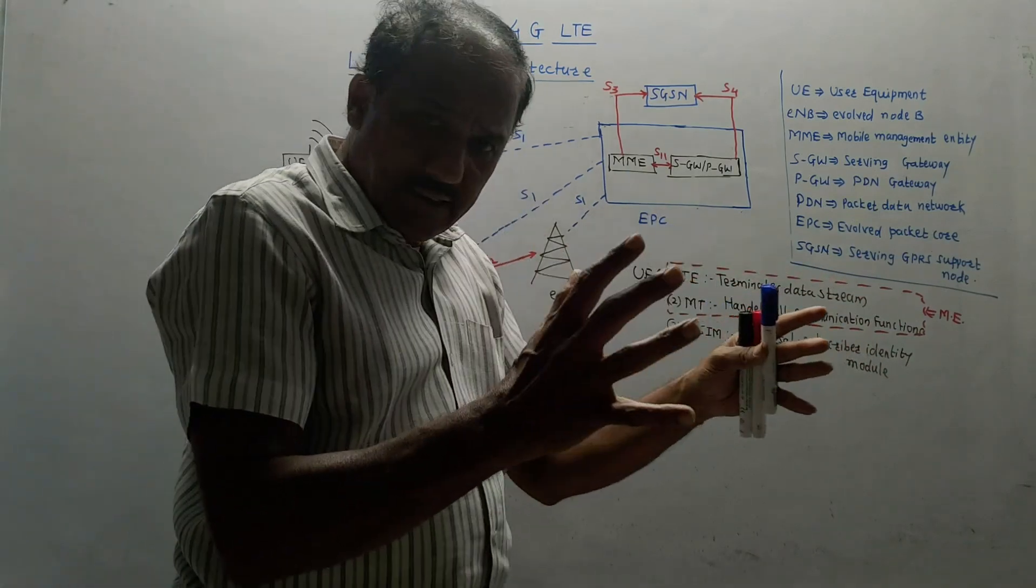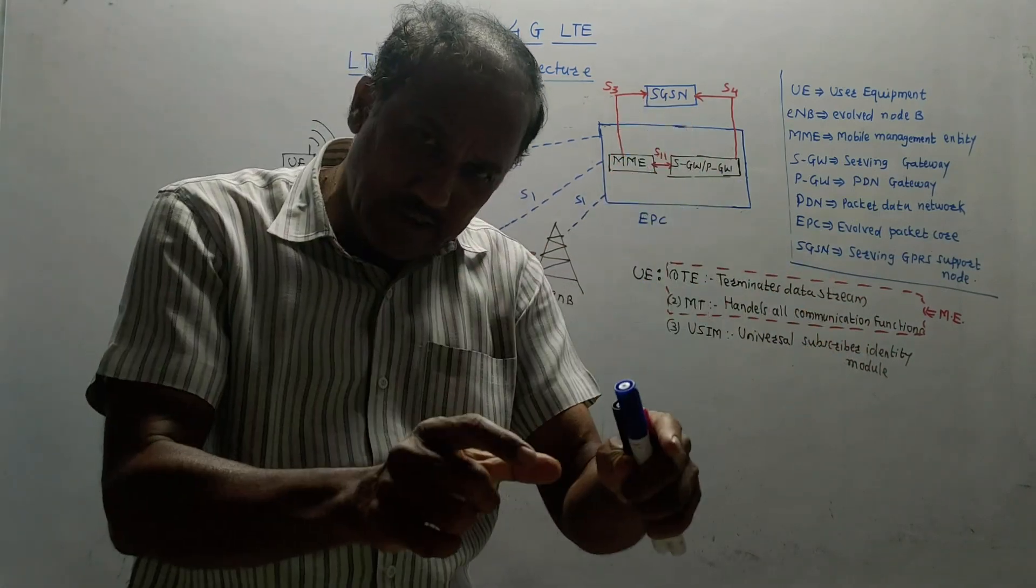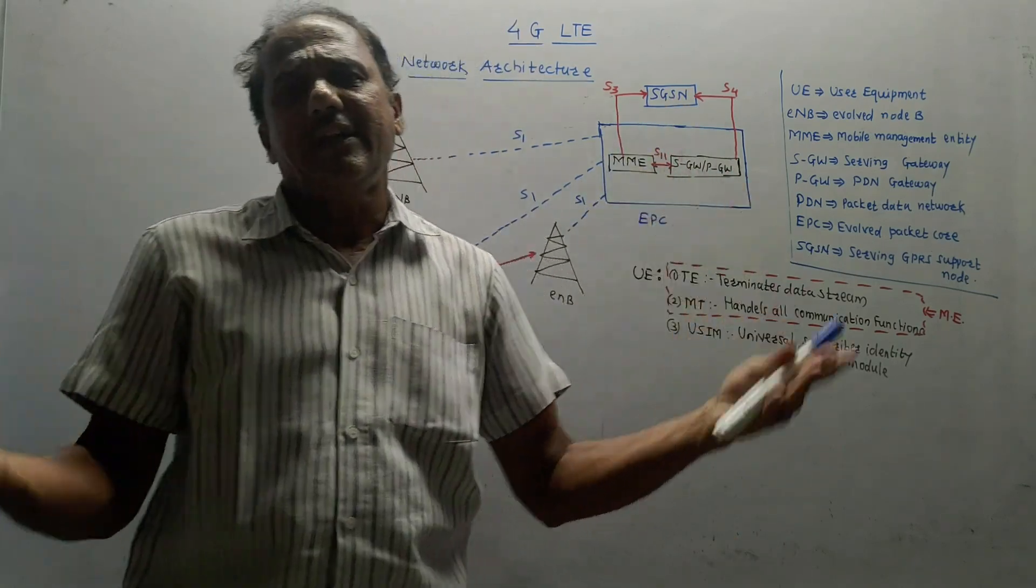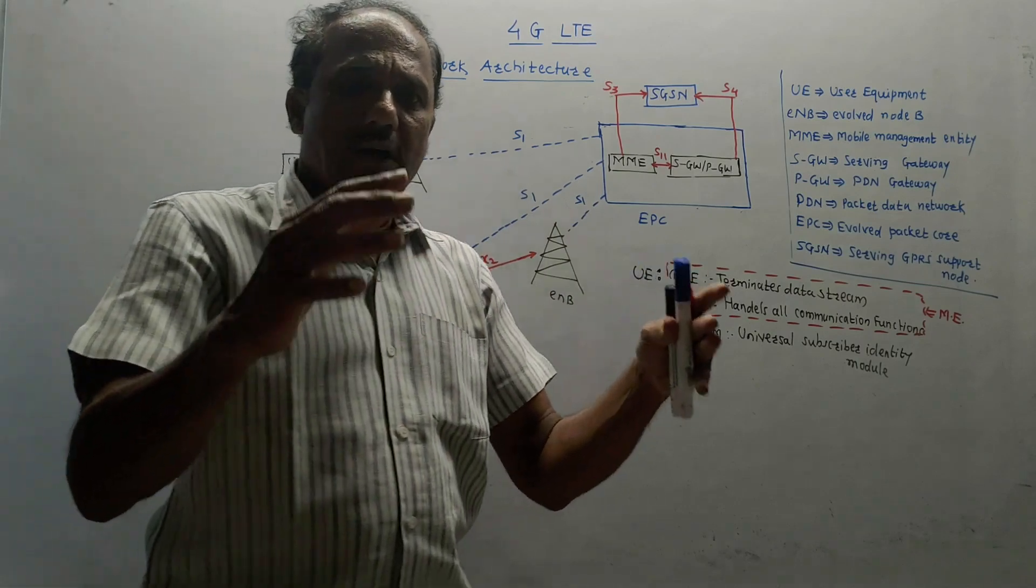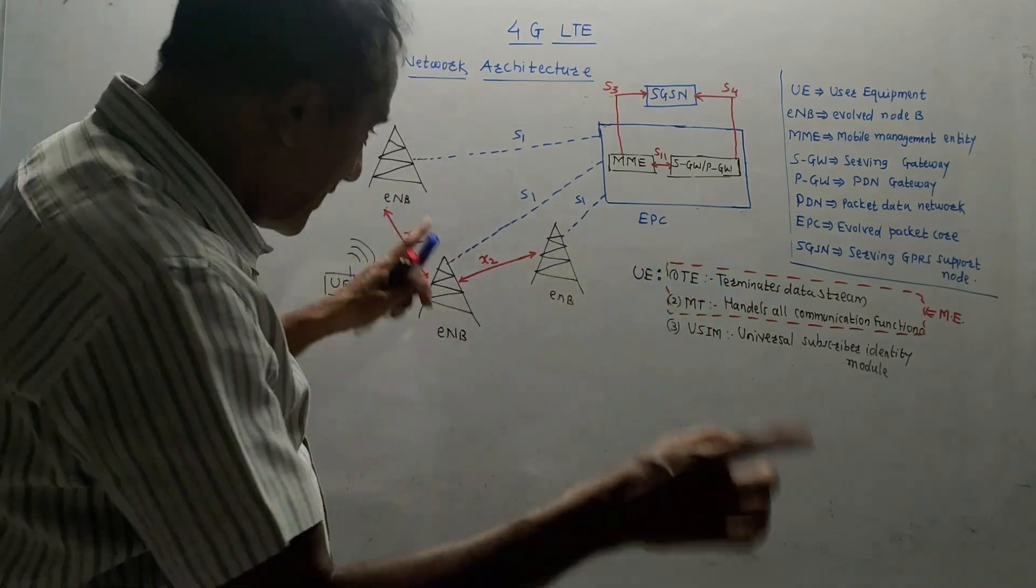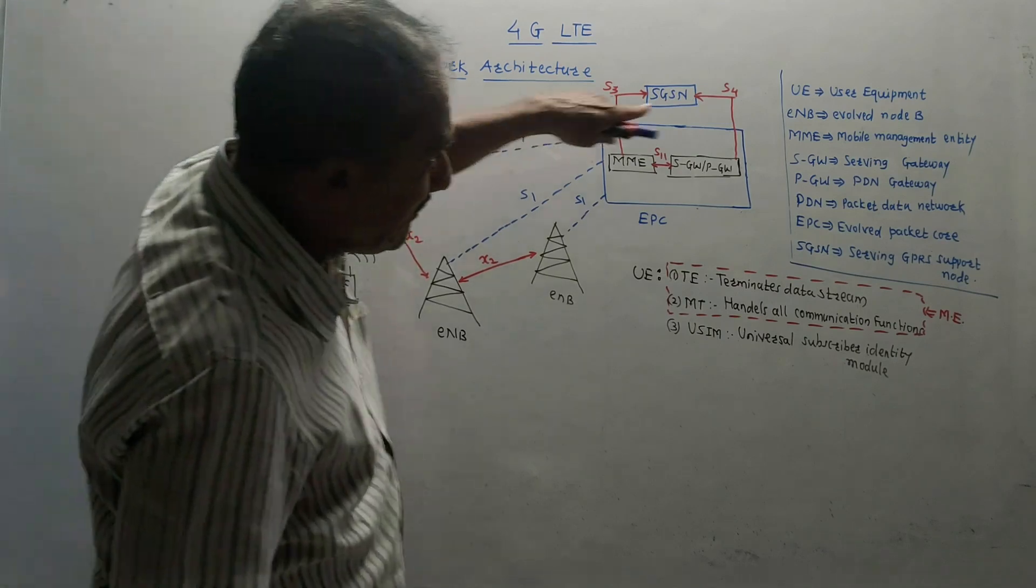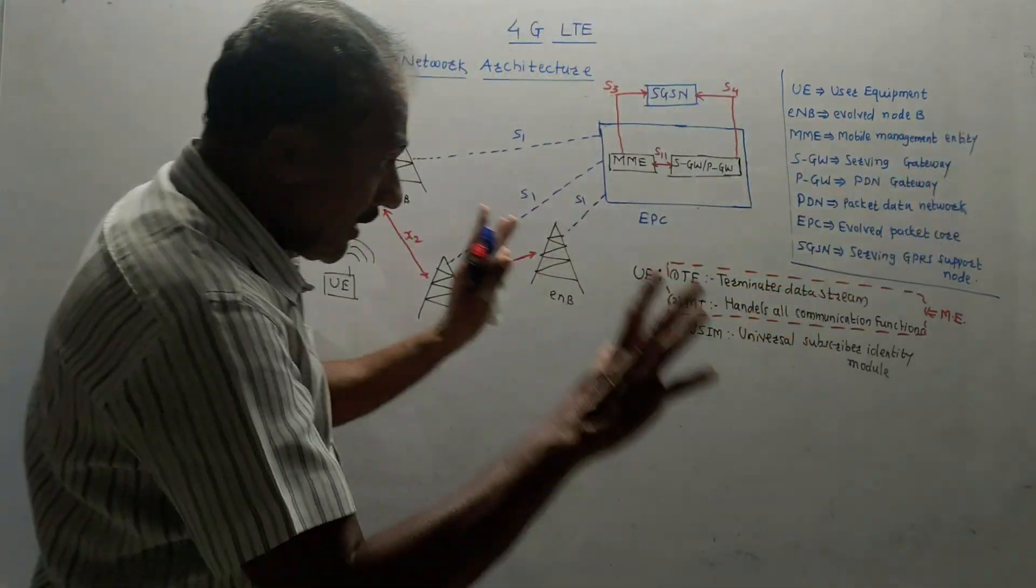First part is UE, user equipment. As the name indicates, user equipment is an equipment which is responsible to cause communication between the base station. Base station is an integral part of ENB, where ENB is evolved node B.